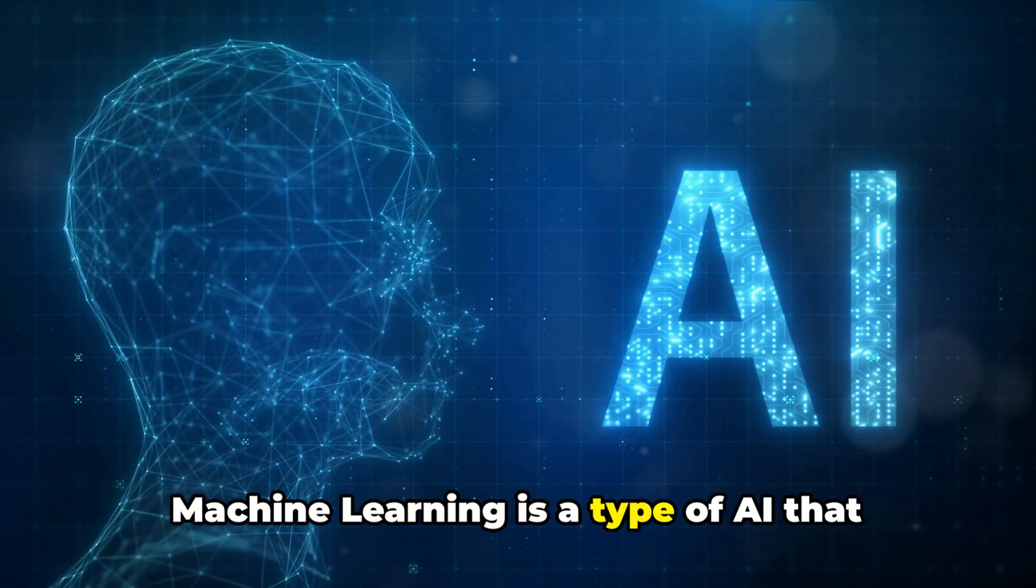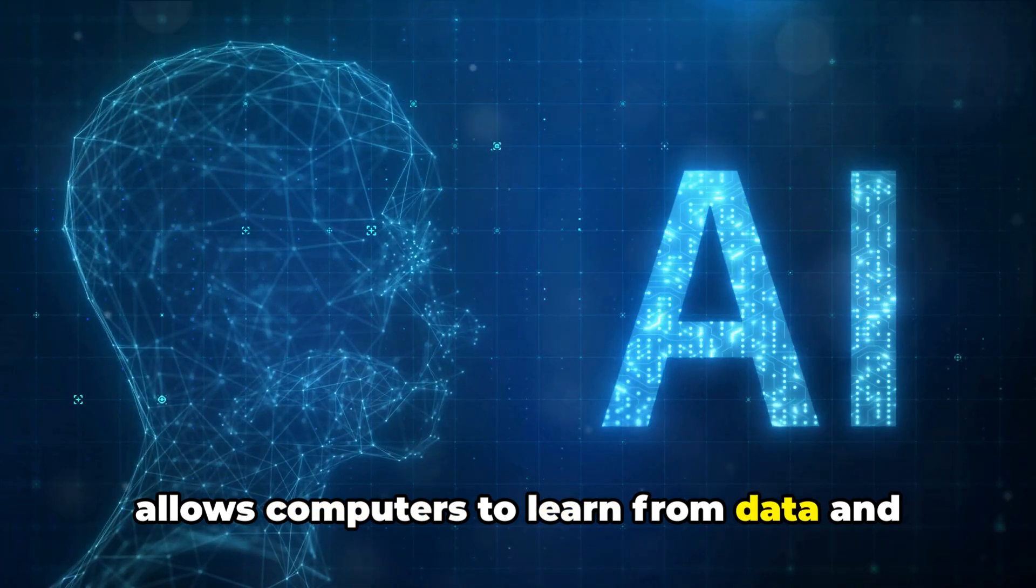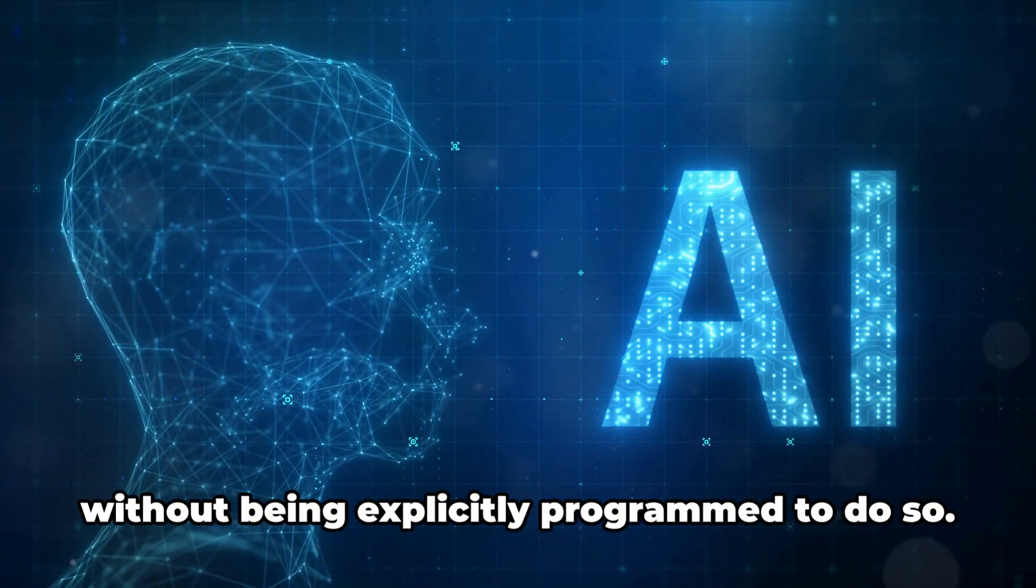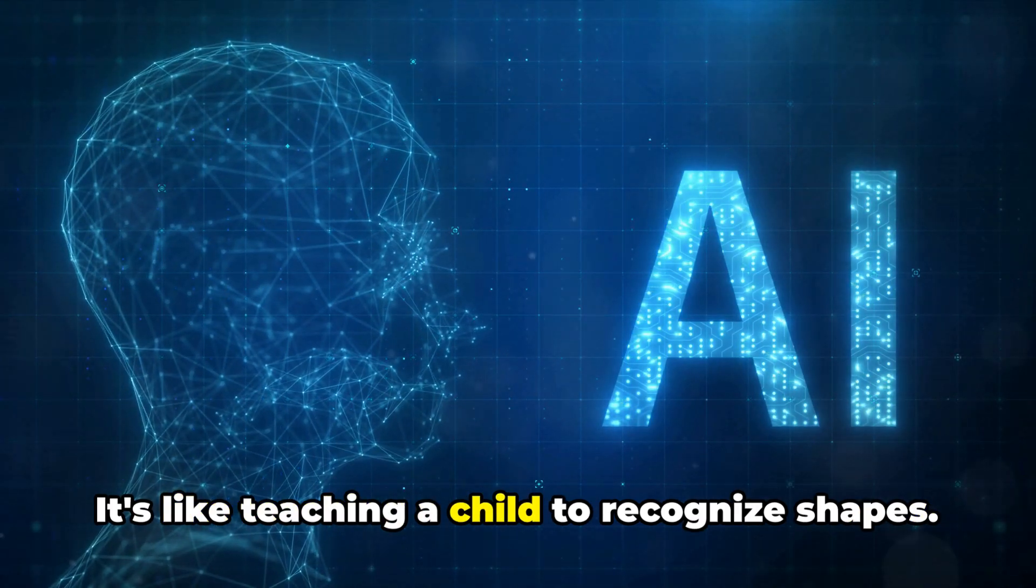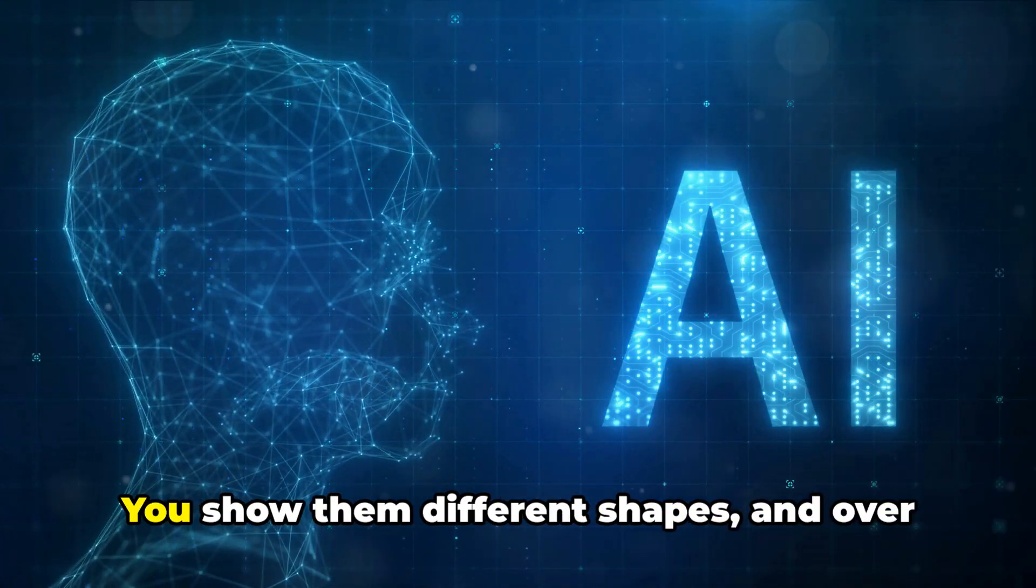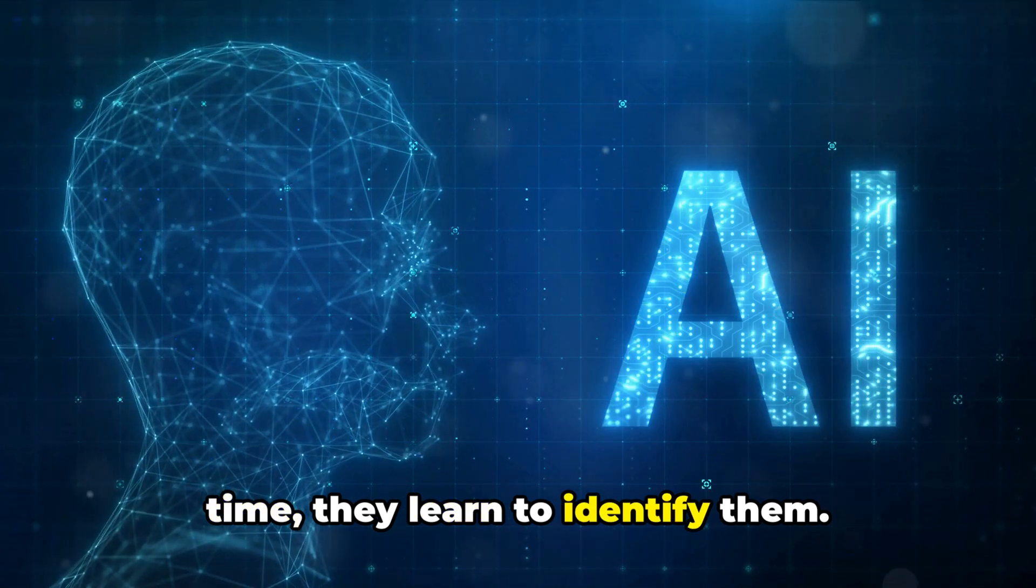Machine learning is a type of AI that allows computers to learn from data and improve their performance over time, without being explicitly programmed to do so. It's like teaching a child to recognize shapes. You show them different shapes, and over time, they learn to identify them.